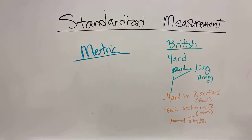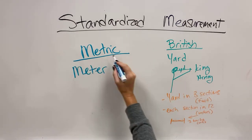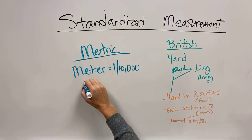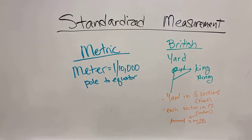So, along comes the metric system in the 1700s. And they said, you know what? We need a more standardized system that everybody can use. It's not based on whatever person is in charge. And so, they said, we're going to use a meter. And a meter is one ten thousandth of the distance from the pole to the equator.